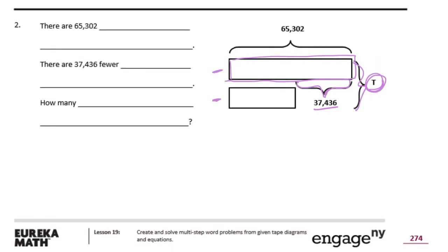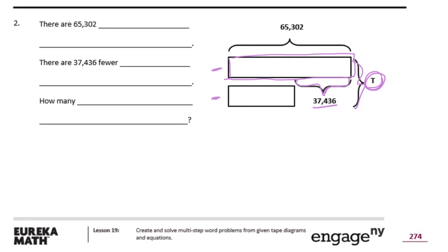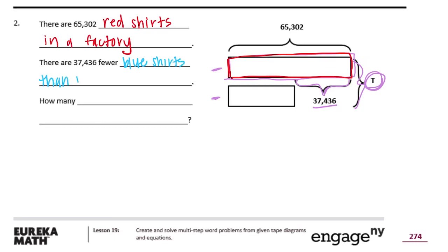Let's think of something made in large quantities — like shirts. Let's say there are 65,302 red shirts in a factory. There are 37,436 fewer blue shirts than red shirts. The question asks: how many blue and red shirts are in the factory total?